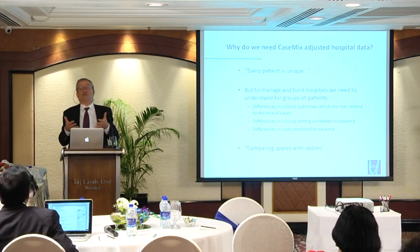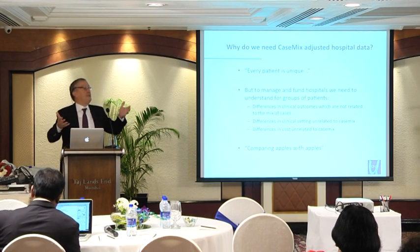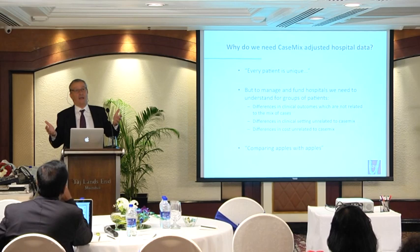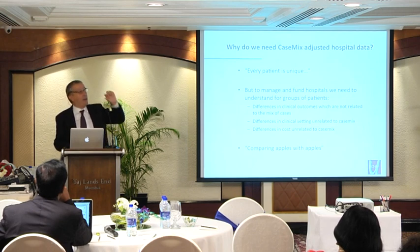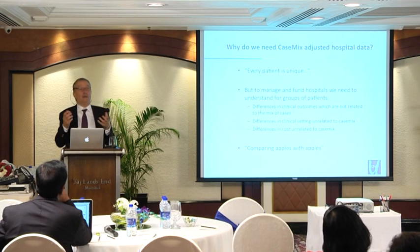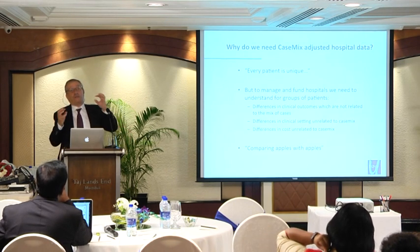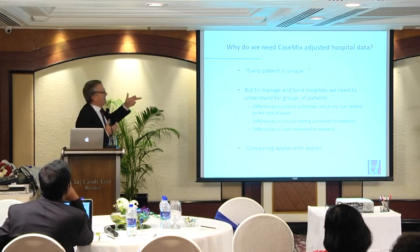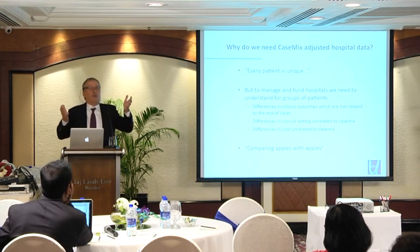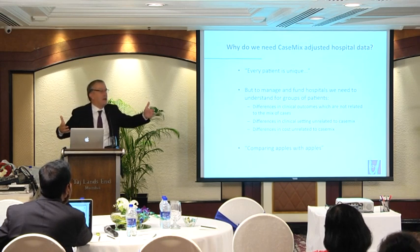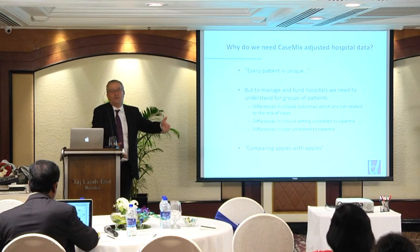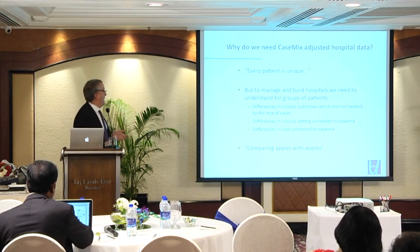The death rate of a very severe disease must not be compared with the death rate of a very common disease. There was a scandal in the US when they decided to publish death rates by hospital without giving the severity or DRG — you can only compare death rates by DRG. Differences in clinical settings unrelated to case mix: a very technical hospital has a bigger budget than a small rural or semi-rural hospital, so you need DRGs for that.